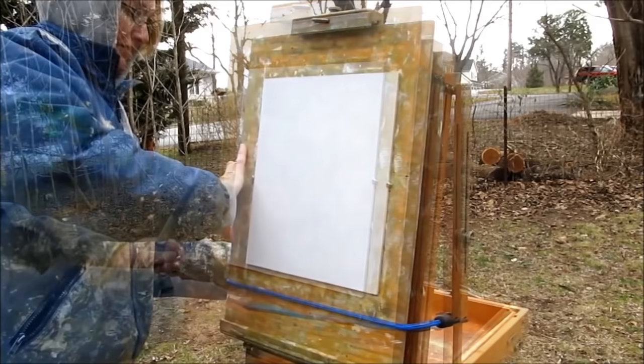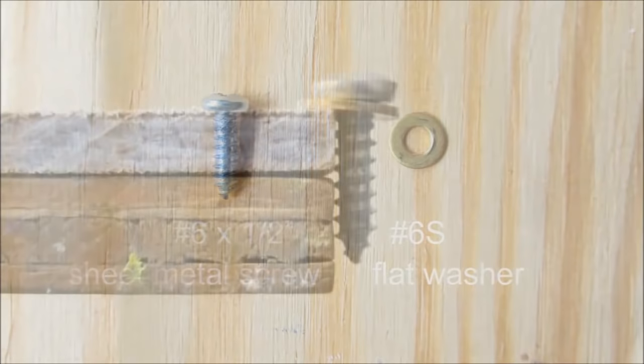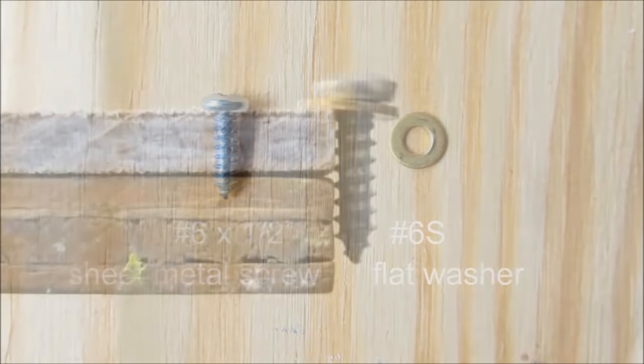I use number 6 by 1/2 inch sheet metal screws and number 6S washers to secure my 3/16 of an inch thick hardboard. You need the washers to prevent the screws from denting your painting surface. For thicker supports, use longer screws.